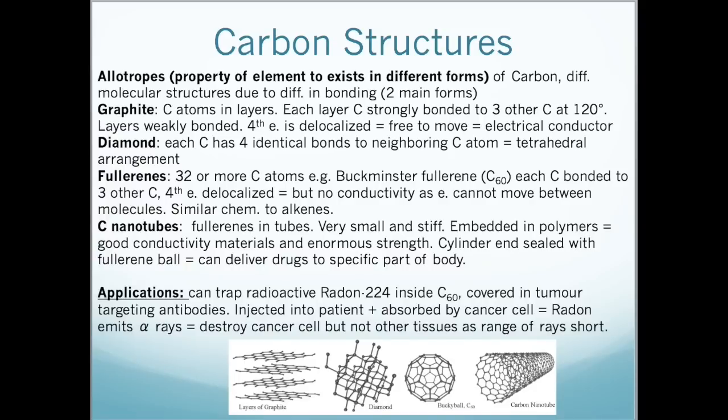Carbon is an allotrope. It has two main forms and this is because of the difference in molecular structures which is as a result of a difference in bonding. Four allotropes that we need to know about are graphite, diamond, fullerenes, and carbon nanotubes.